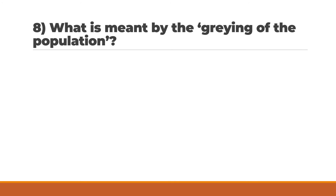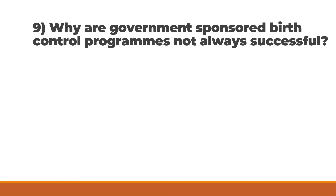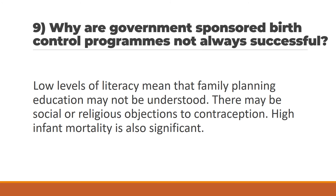Question 8: What is meant by the 'greying of the population'? Question 9: Why are government-sponsored birth control programs not always successful? Low levels of literacy mean that family planning education may not be understood. There may be social or religious objections to contraception. High infant mortality is also significant.